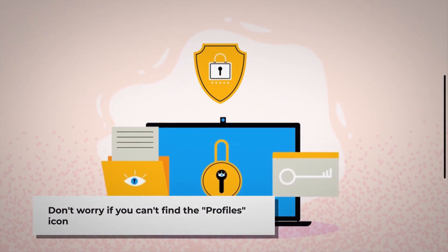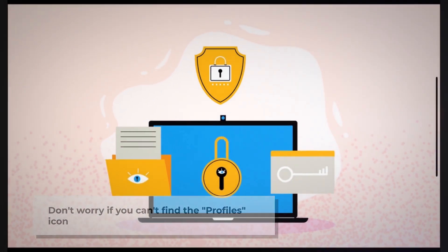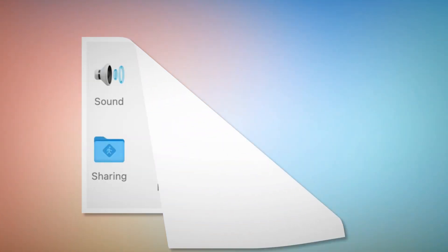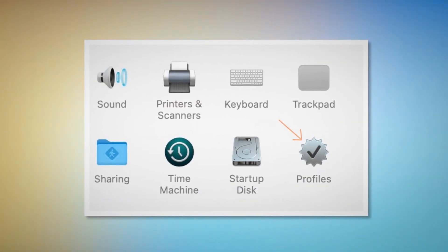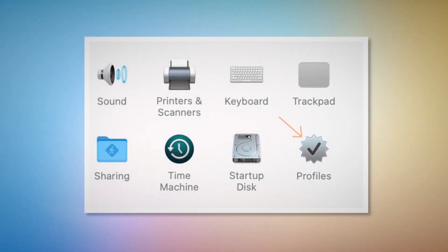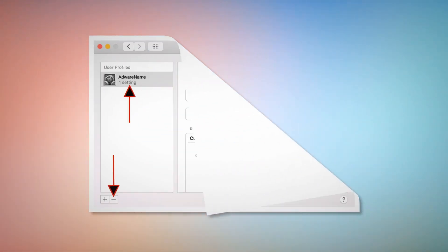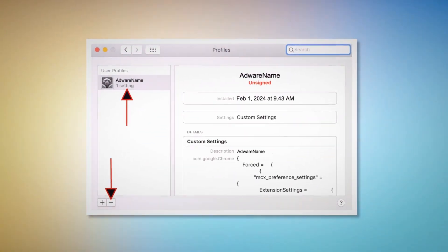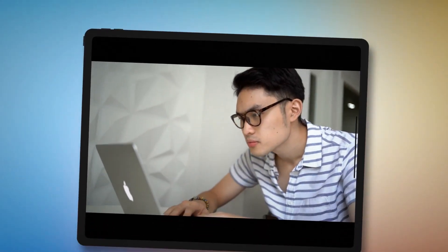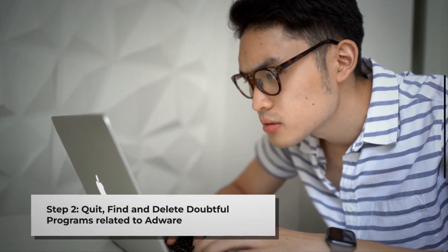If you can't find the Profiles icon, you can relax and skip Step 1 and go directly to Step 2. But if you can find the Profiles icon, as shown in the screenshot, click on it. You will be taken to a window like the one shown. Select the unknown or doubtful profile and then click the minus button to remove the profile.